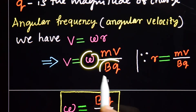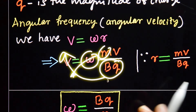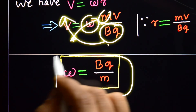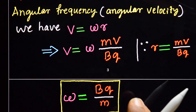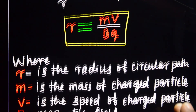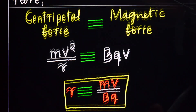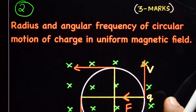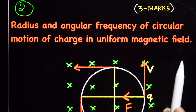Omega is equal to BQ in the numerator and M in the denominator. That is, ω = BQ/M. This is the angular frequency or angular velocity. And R = MV/(BQ) is the radius of the circular motion of a charge in a uniform magnetic field.